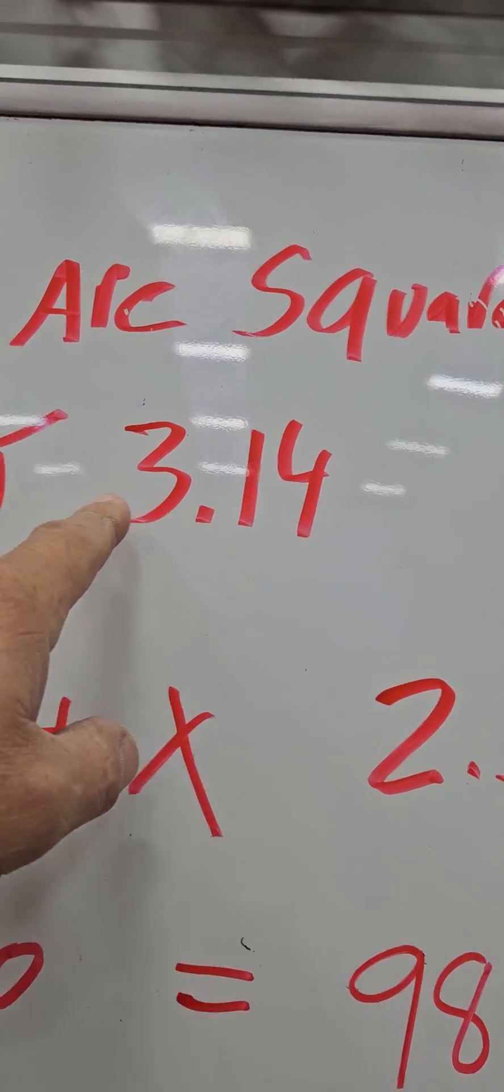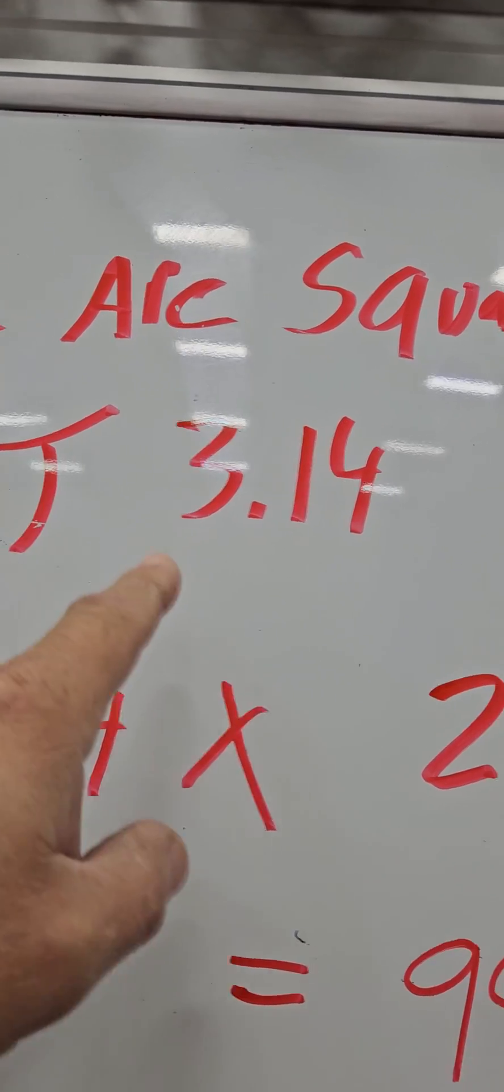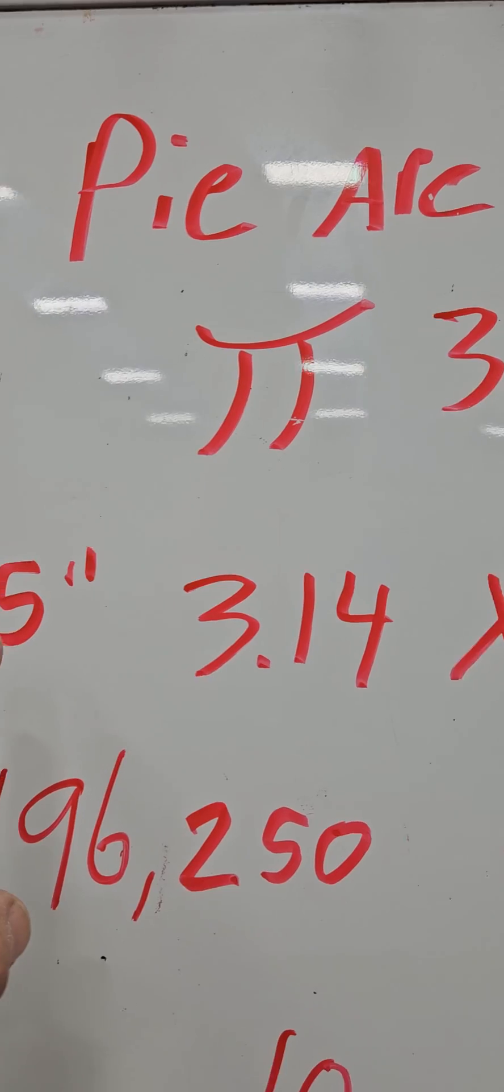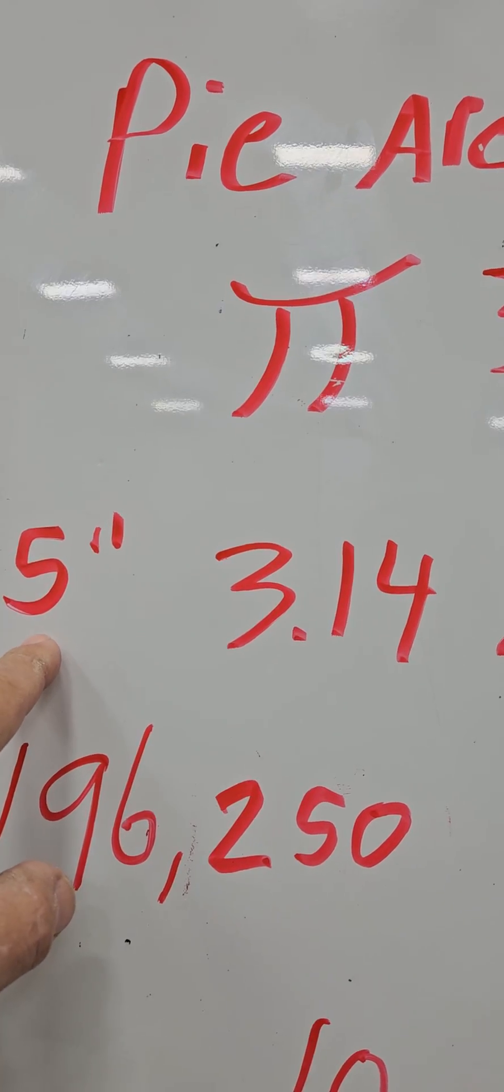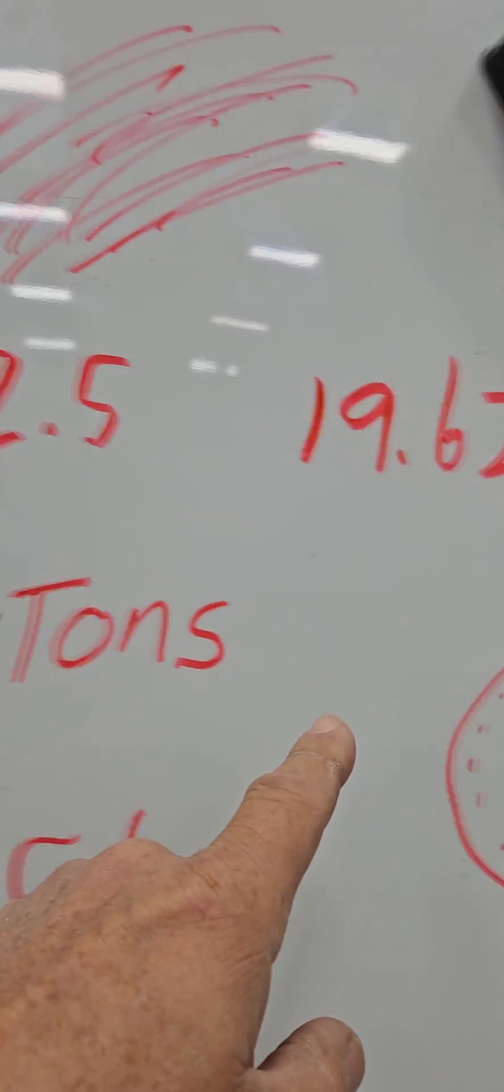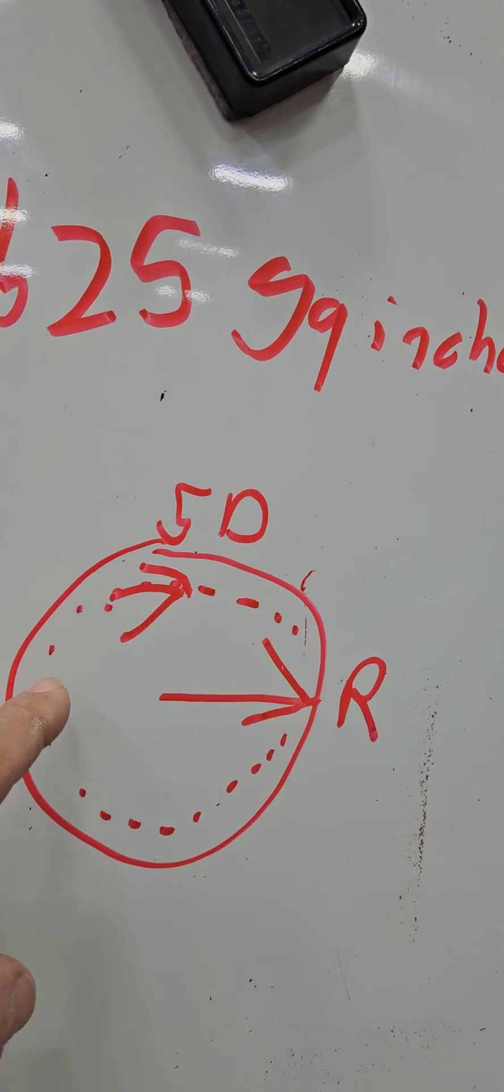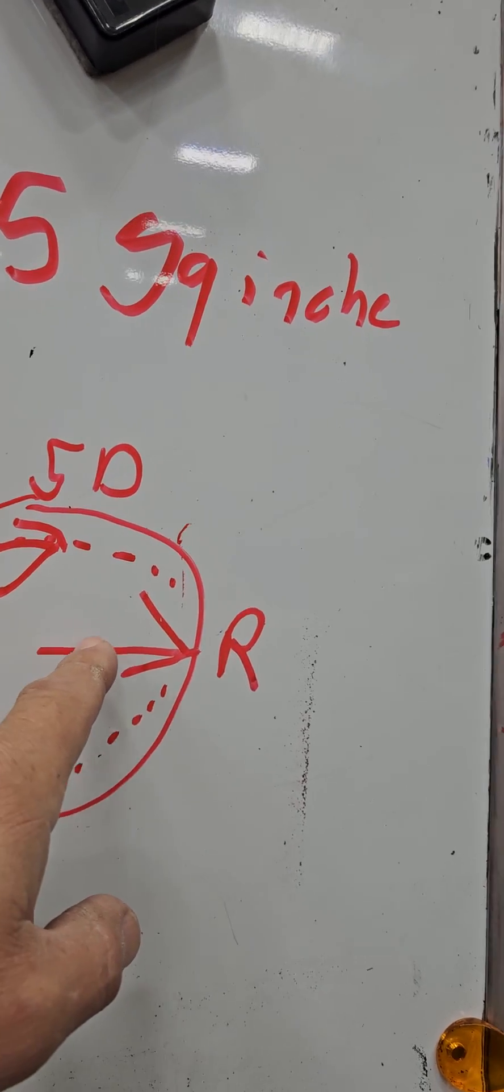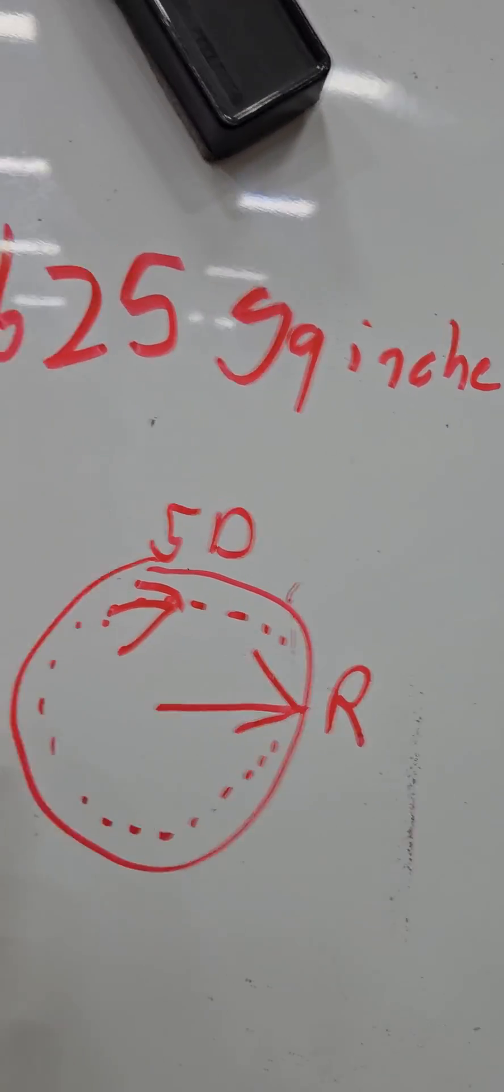So this is pi, and we know that we have a 5 inch diameter cylinder. So 5 is the diameter. Radius is half of that, so that's 2.5.